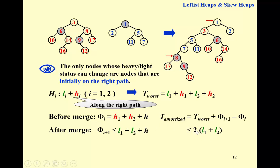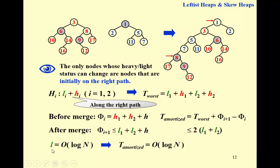So two times the sum of light nodes is the upper bound for the amortized time. What remains to be proven is that this is O(log n). Since light means the right subtree is smaller than the left subtree, based on this fact you can prove that although we are not sure about the total right path length, the number of light nodes along the right path must be O(log n). Therefore this part is O(log n) and the proof is complete.